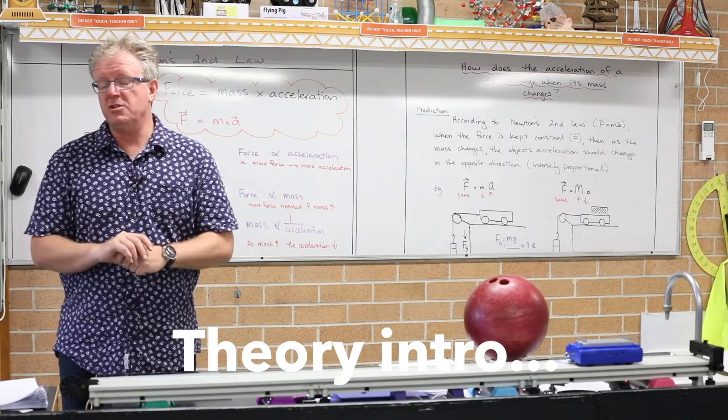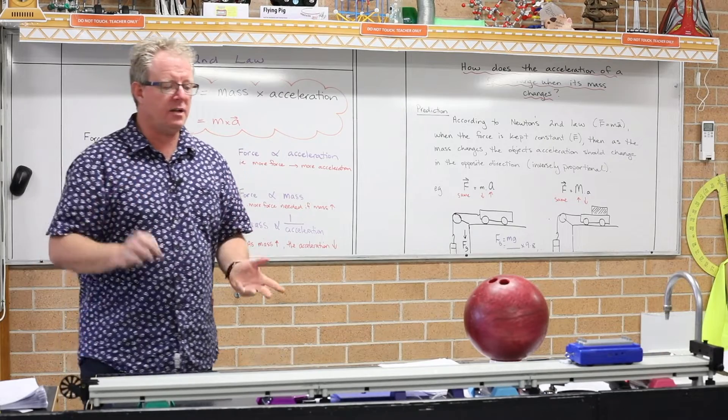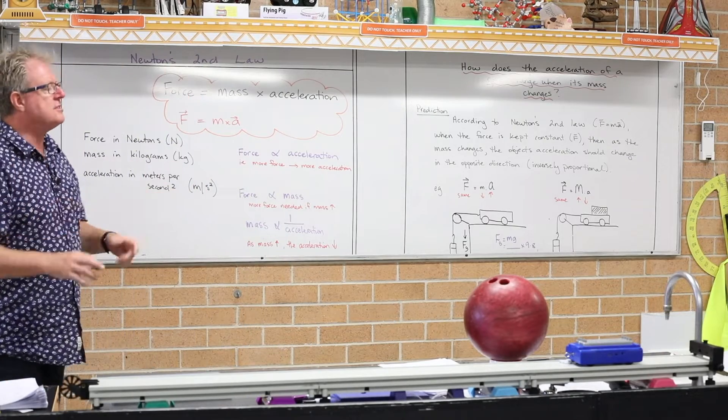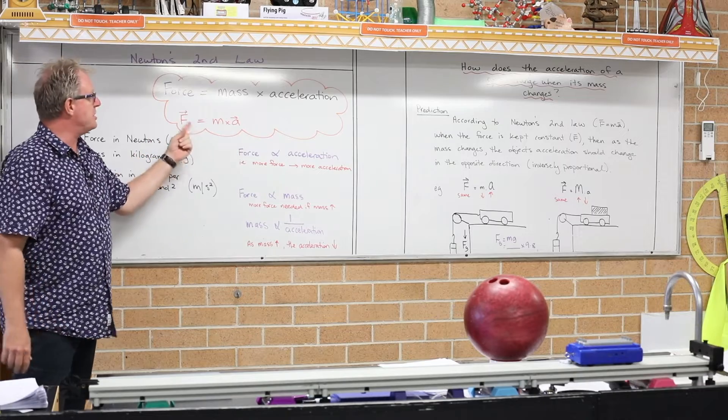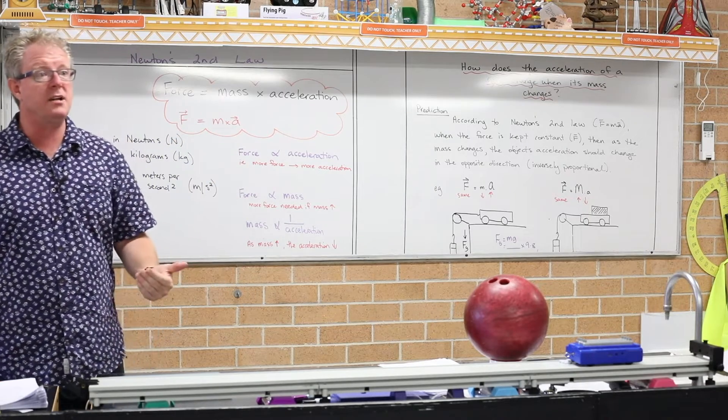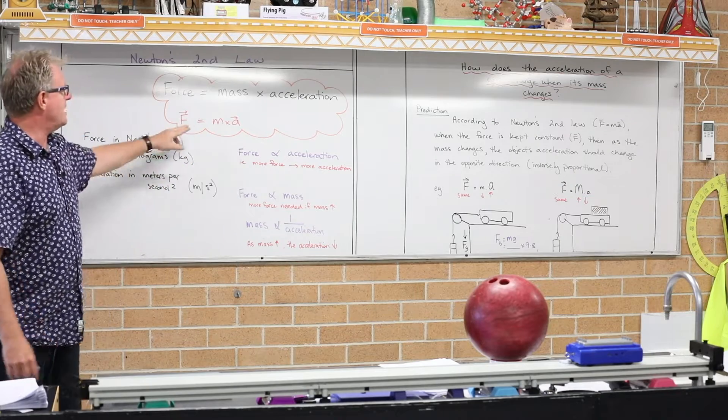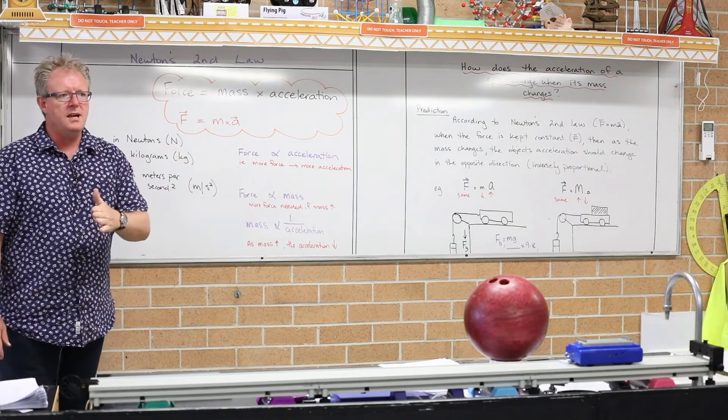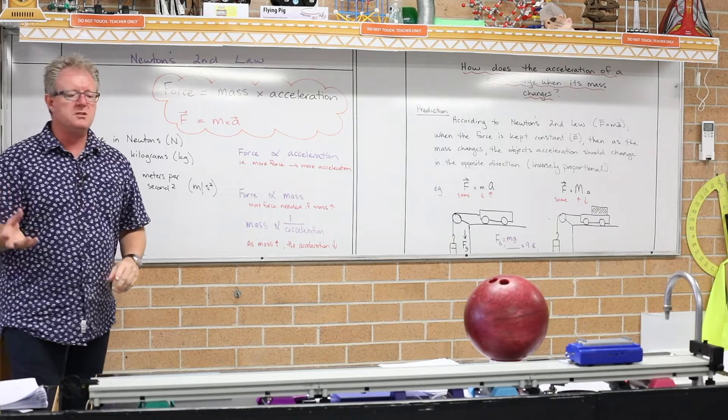Last lesson we looked at Newton's first law, and we're going to be looking at the second law now. You guys know it, you may have heard it before. It's a pretty famous equation, F equals mA. It's nearly as famous as E equals mc squared by Einstein. But F equals mA came from Isaac Newton, and you experience it all the time.